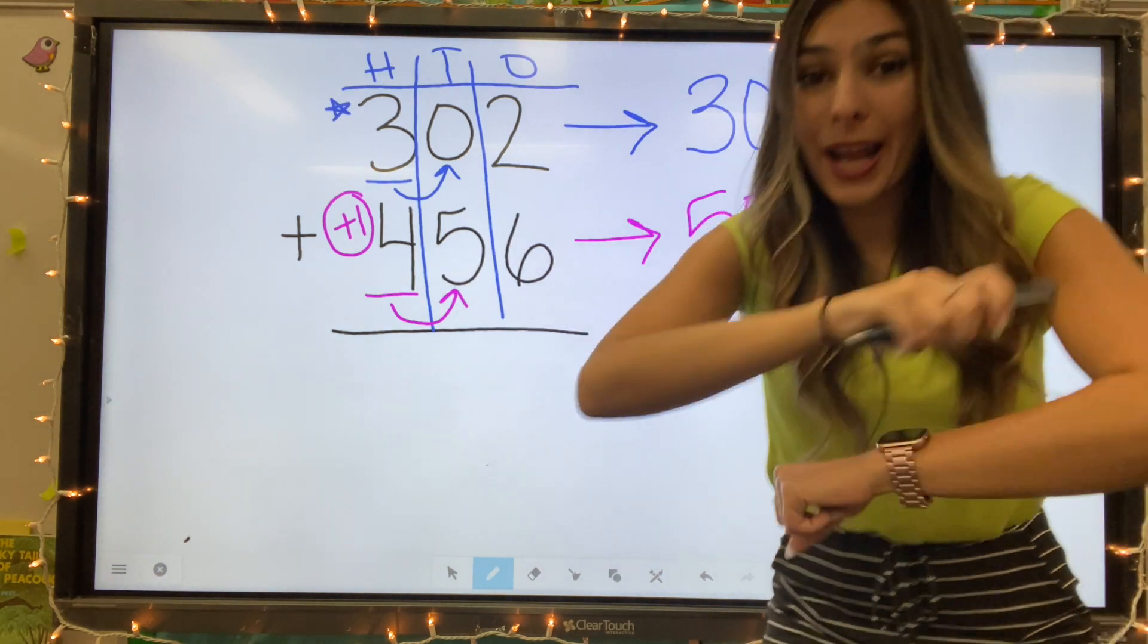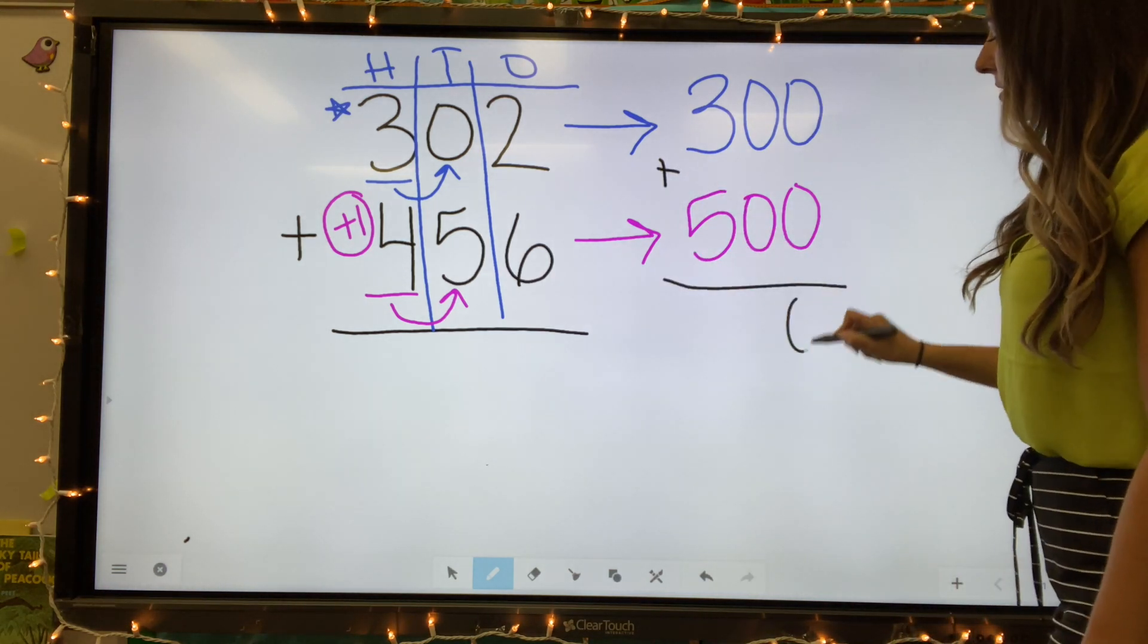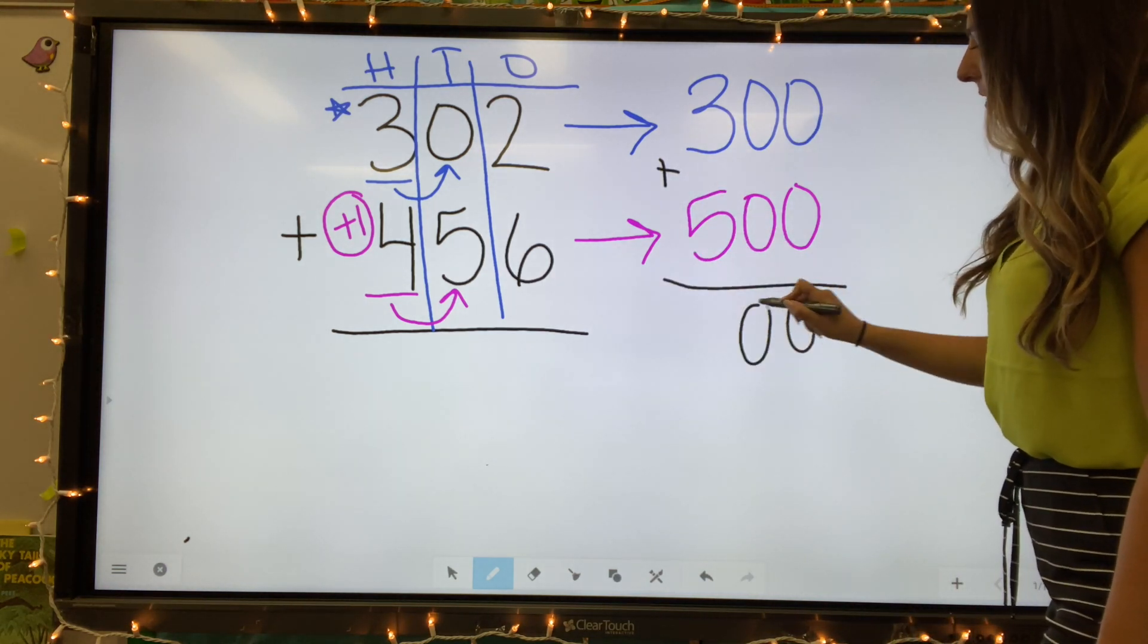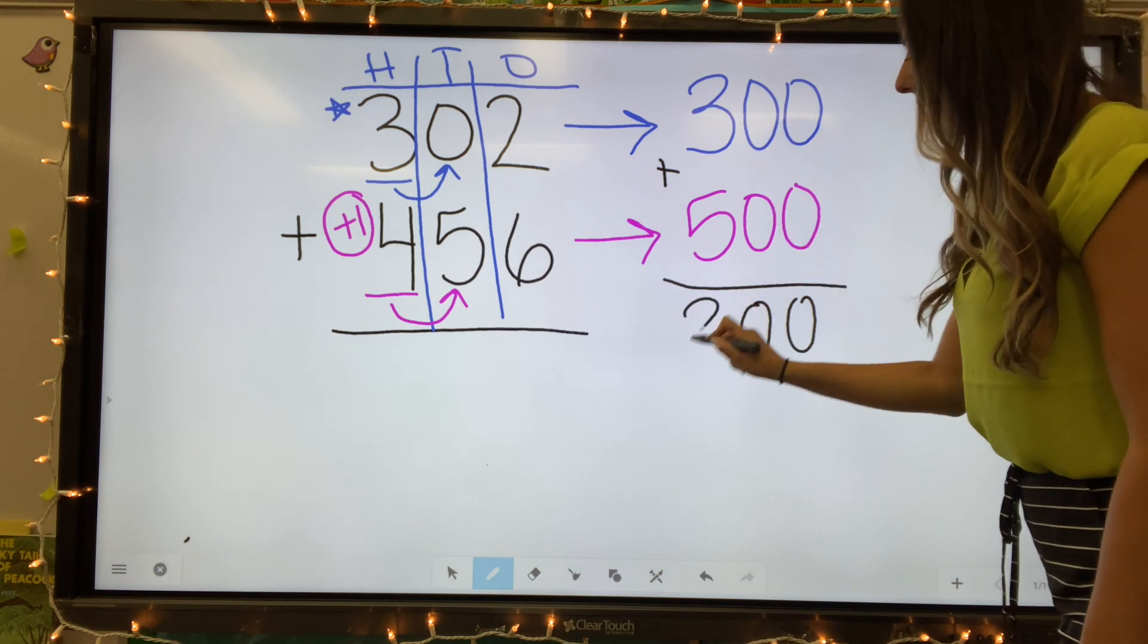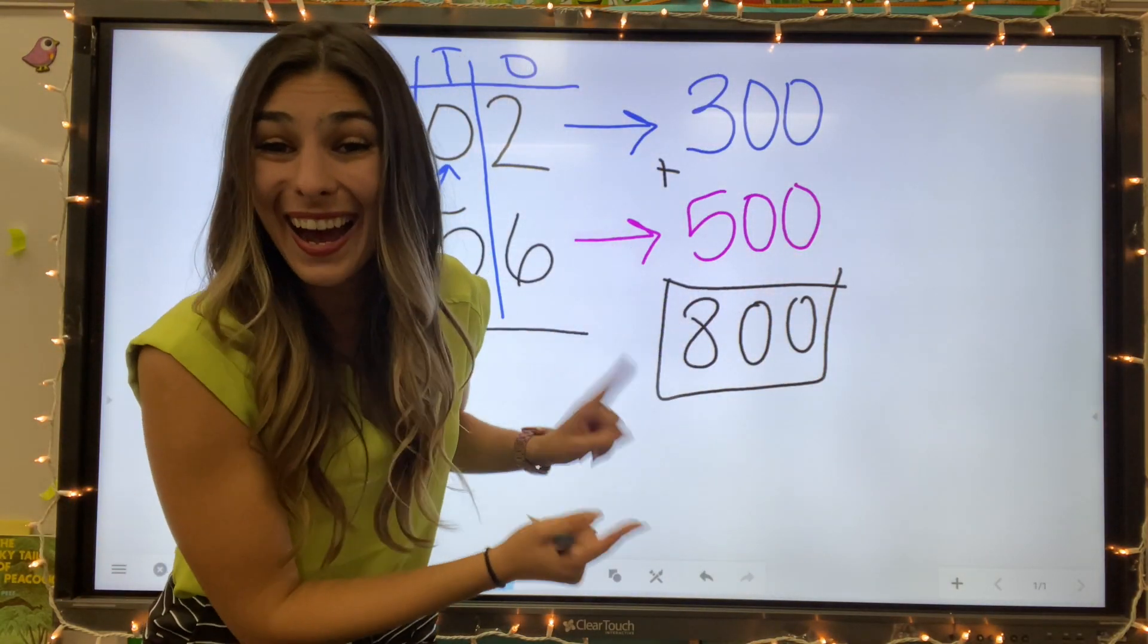Now that we've rounded each number, we need to add them up. Zero plus zero equals zero. Zero plus zero equals zero. Three plus five equals eight. So our estimated number is 800.